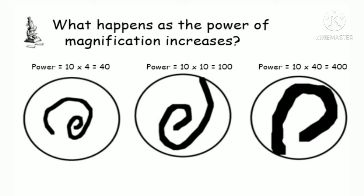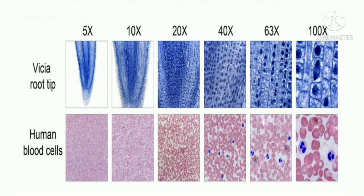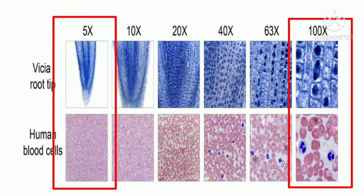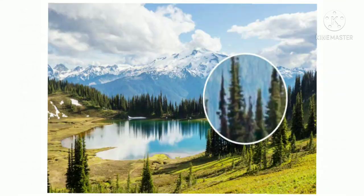To be more specific, looking at root tips and blood cells: at 5x you can see the whole specimen but not in detail. At 10x it becomes larger, at 20x even more so, and at 100x you see an enlarged image with detail of each cell. The area of specimen visible at 100x is much smaller compared to 5x.